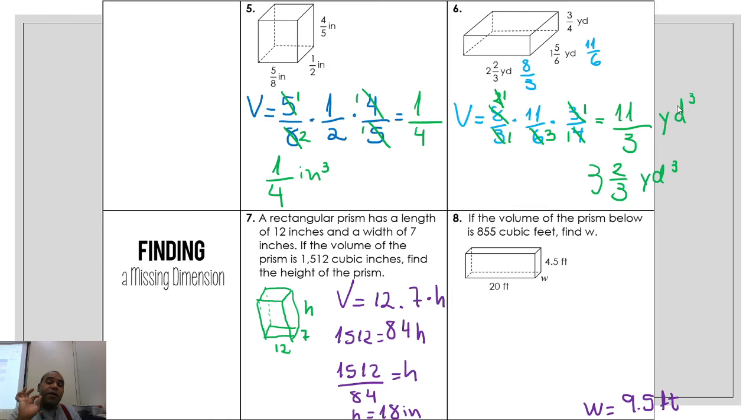Great, guys. We have two word problems here, the same thing, but finding the dimension. Like here, number eight. If the volume of the prism below is 855 cubic feet, find w.